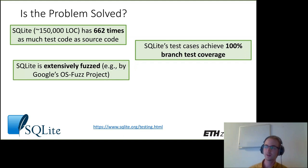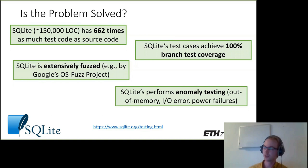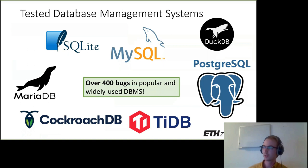SQLite is also extensively fuzzed, for example by Google's open source fuzz project and also by individual researchers. SQLite does several kinds of testing like unit testing, and they even do anomaly testing where they verify that SQLite works correctly in the presence of out-of-memory errors, input-output error situations, or power failures. Nevertheless, in our work we found over 400 bugs in popular and widely used database management systems.